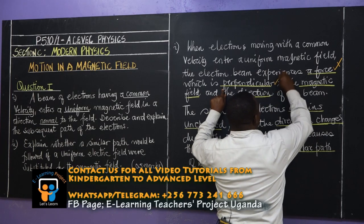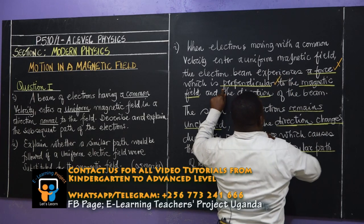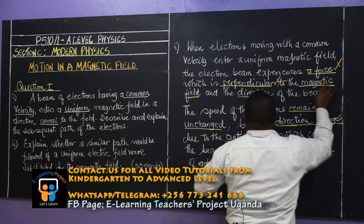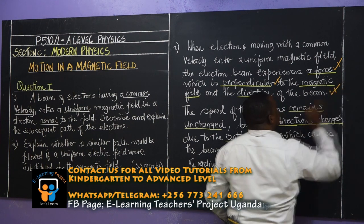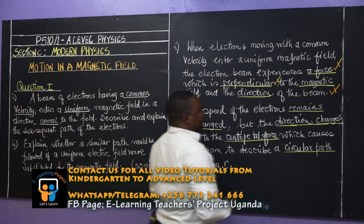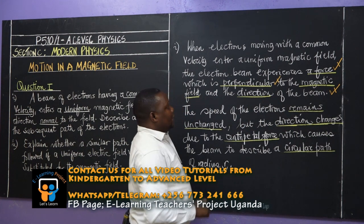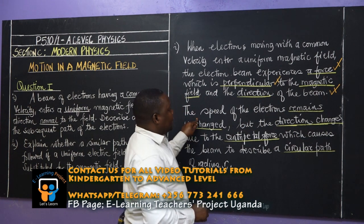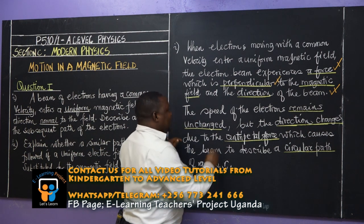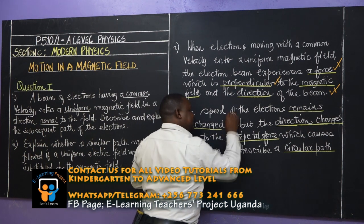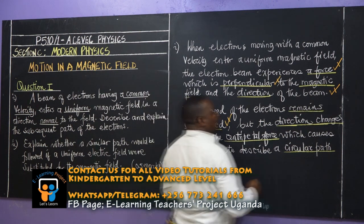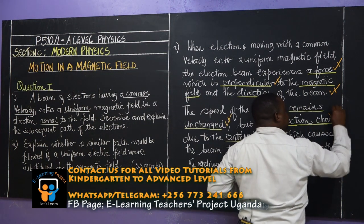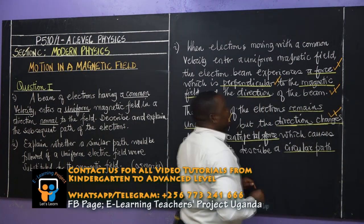That force being perpendicular to both the magnetic field and the direction — we have that. Now, the aspect of the speed of the electron remaining unchanged is a marking point. However, the direction does change.